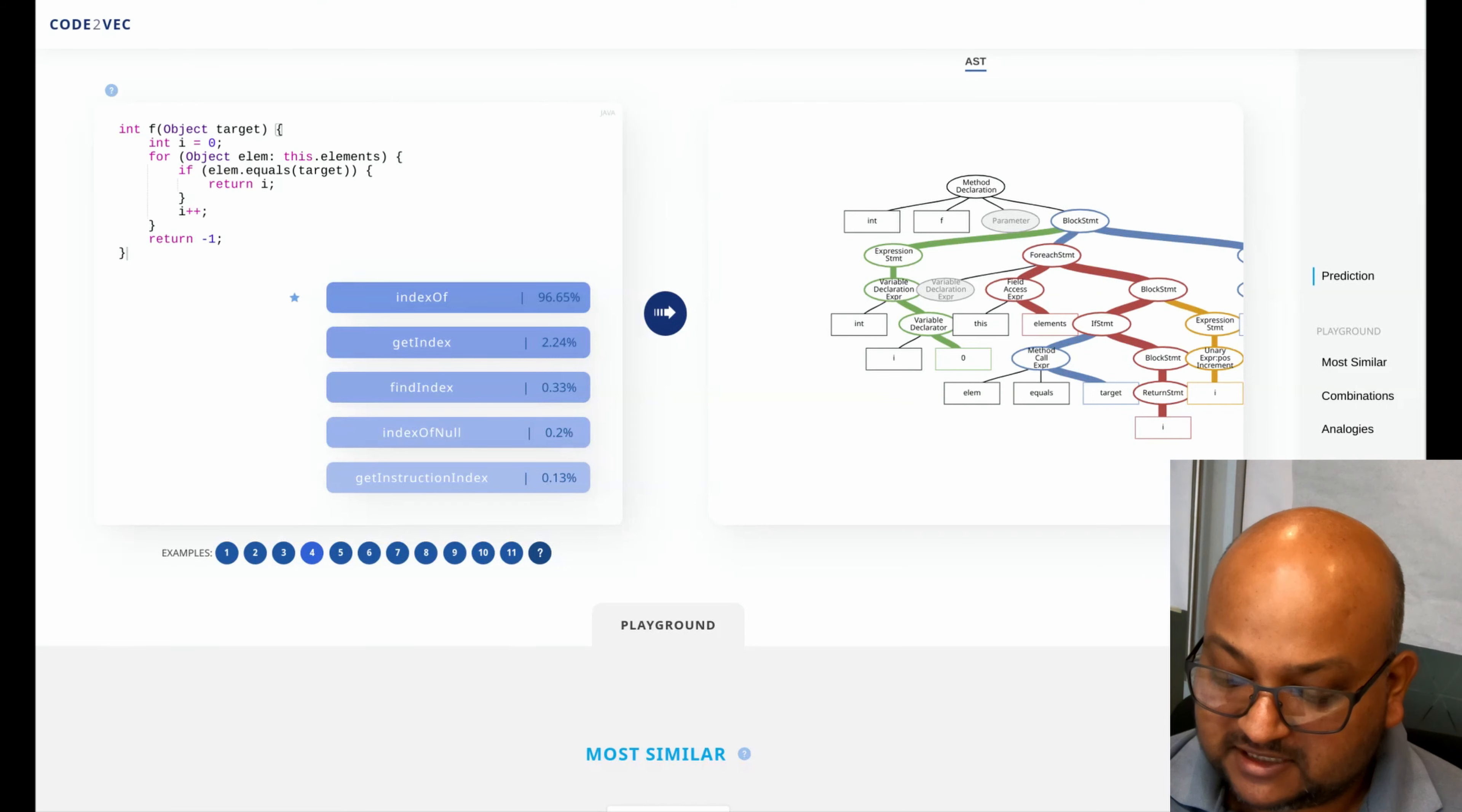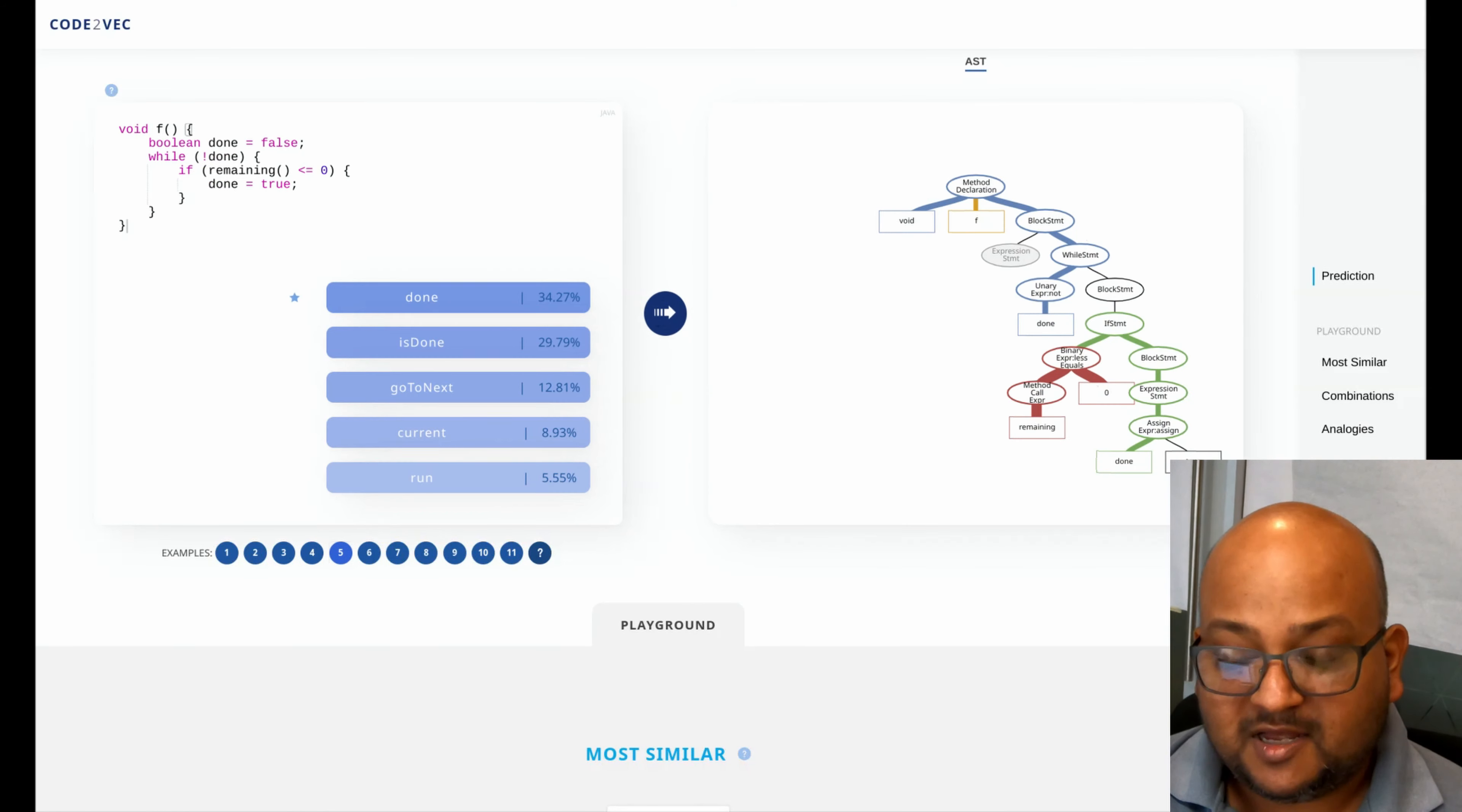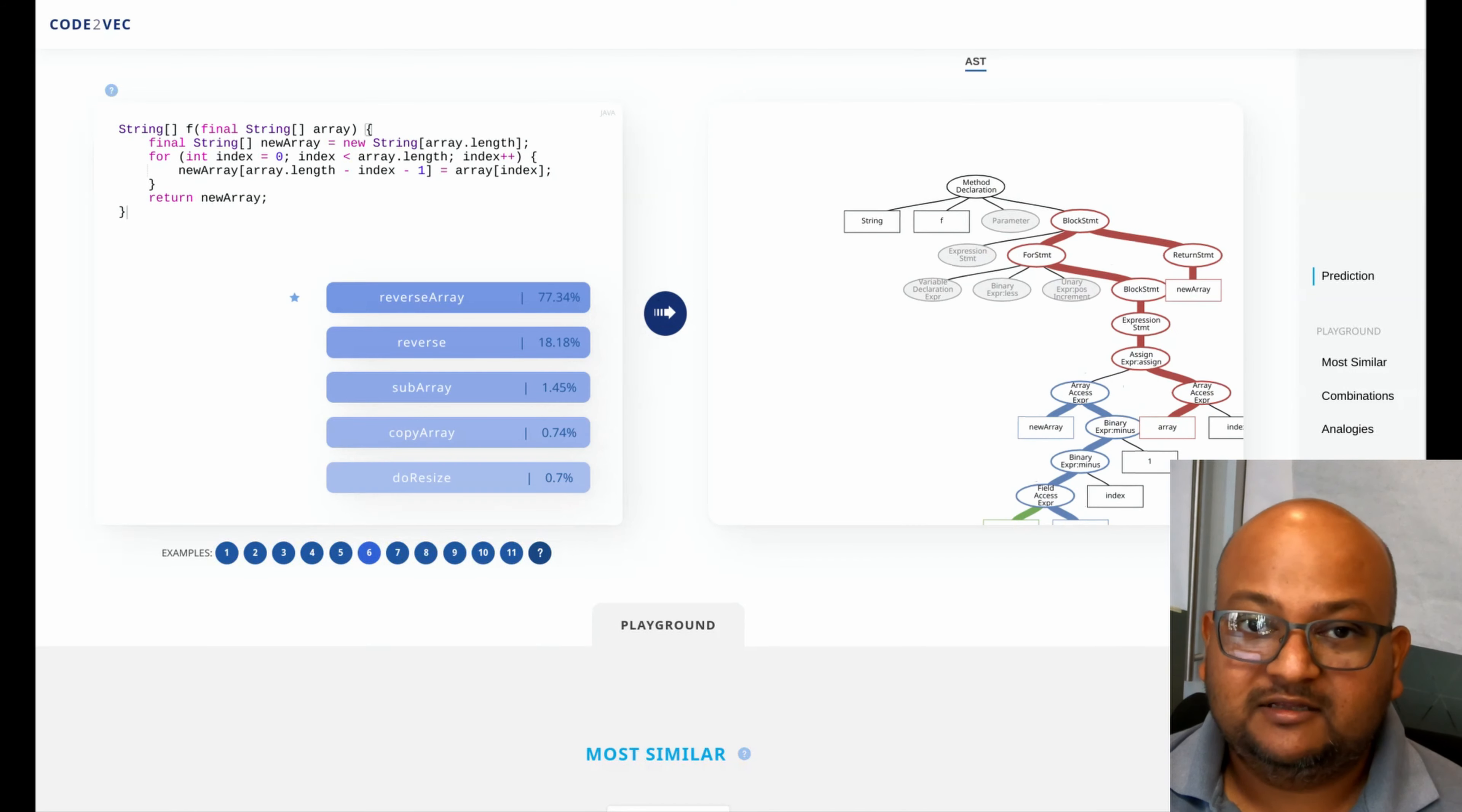Let's look at a couple of other examples. This one looks like it's looping until some piece of work is done and that's a perfectly reasonable name for that. What does this do? This looks like it's reversing the order of elements within an array. There you go and the name predicted is reverse array. Let's do one more example.